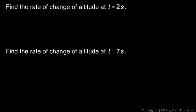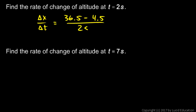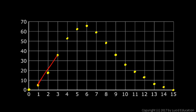To find the rate of change of altitude at two seconds, we calculate delta x over delta t going from one to three seconds: that's 36.5 minus 4.5 over a time interval of two seconds. That calculation comes out to 32 meters over two seconds, or 16 meters per second. That is the slope of that line segment and a good estimate for the instantaneous rate of change at that moment in time.